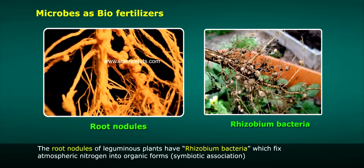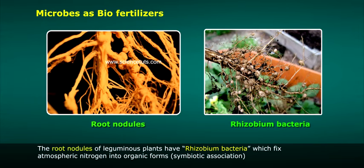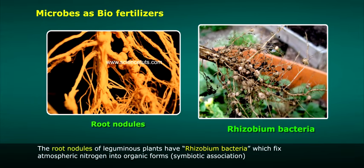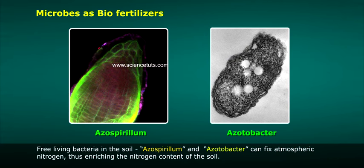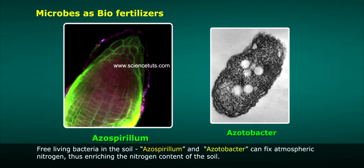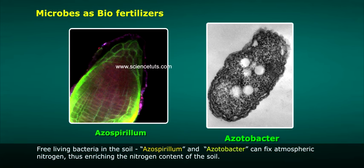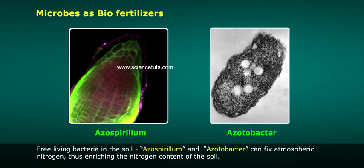The root nodules of leguminous plants have Rhizobium bacteria which fix atmospheric nitrogen into organic forms — a symbiotic association. Free-living bacteria in the soil, Azospirillum and Azotobacter, can also fix atmospheric nitrogen, thus enriching the nitrogen content of the soil.